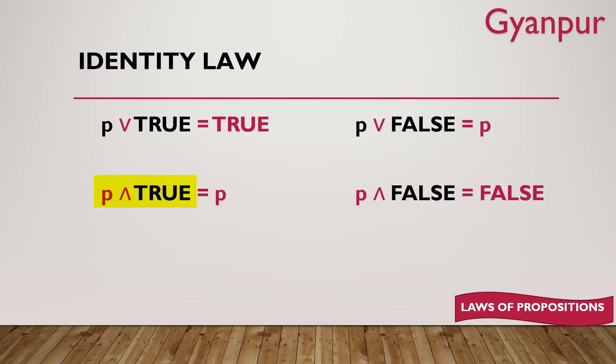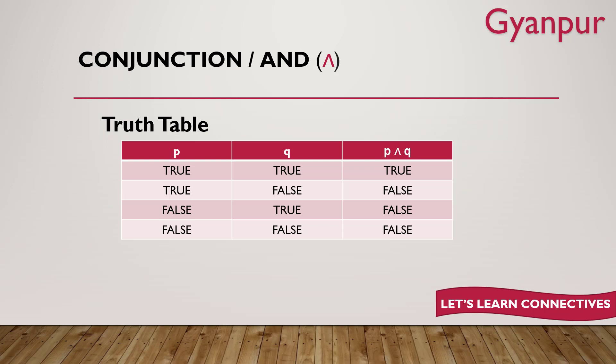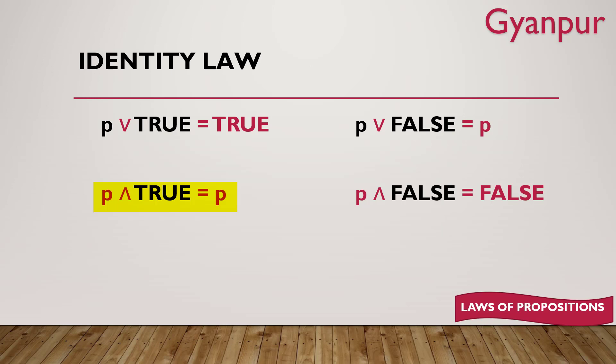Now if I talk about p AND true — in this case, both conditions are checked. If one statement is true, it checks whether the other statement is also true. Only if both are true will the final answer be true. So if p AND true is given, the answer depends on p. If p is true, the final answer is true; if p is false, the final answer is false. Both statements must be true to get true in AND. But in OR, even if one statement is true, the final answer is true.